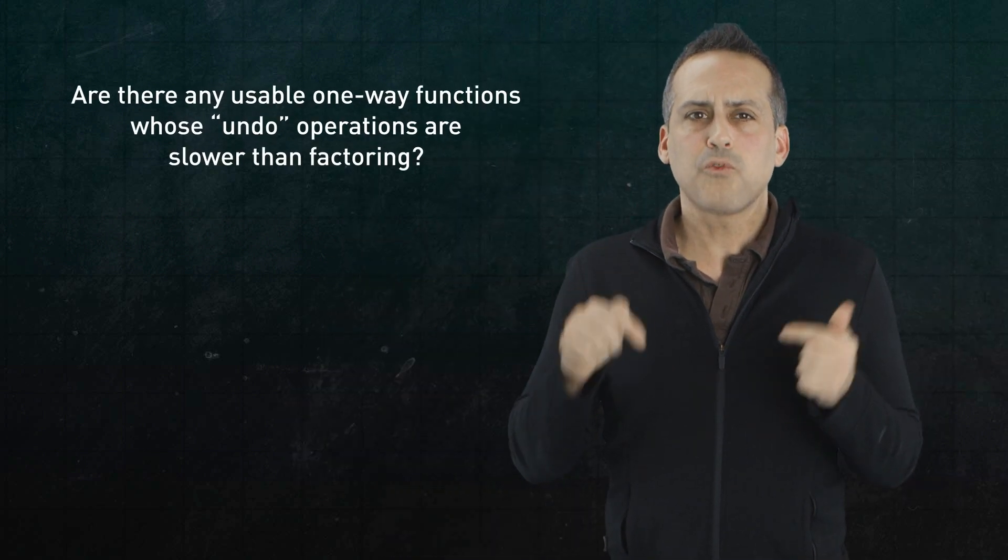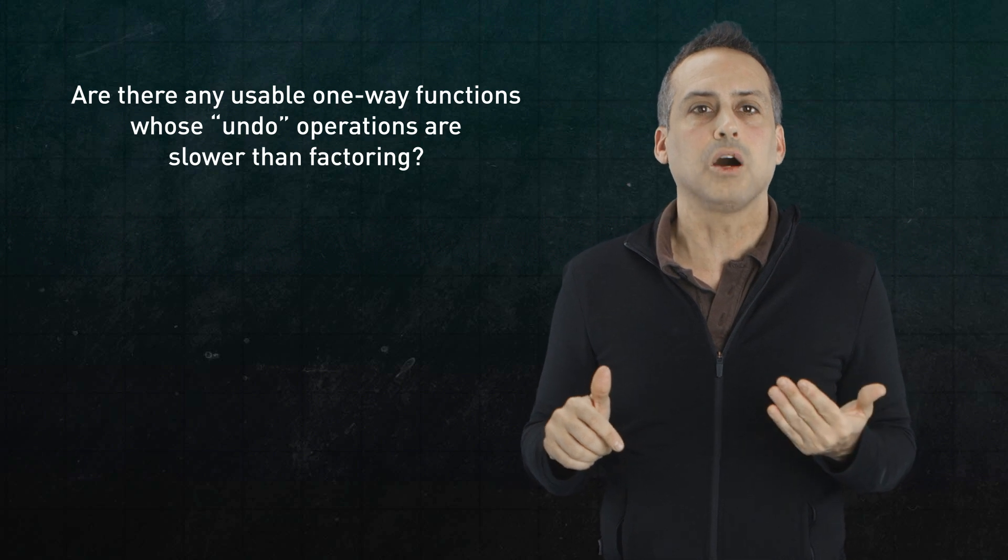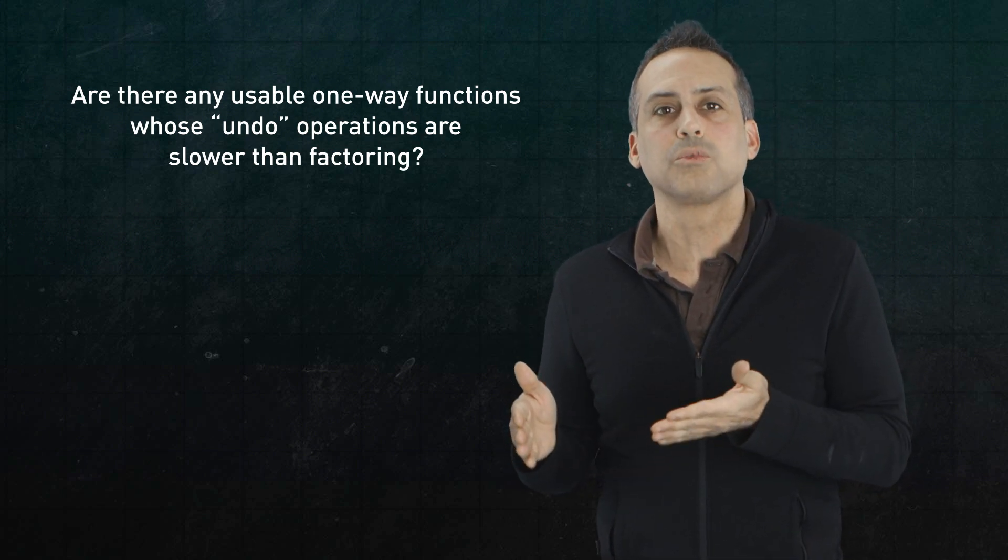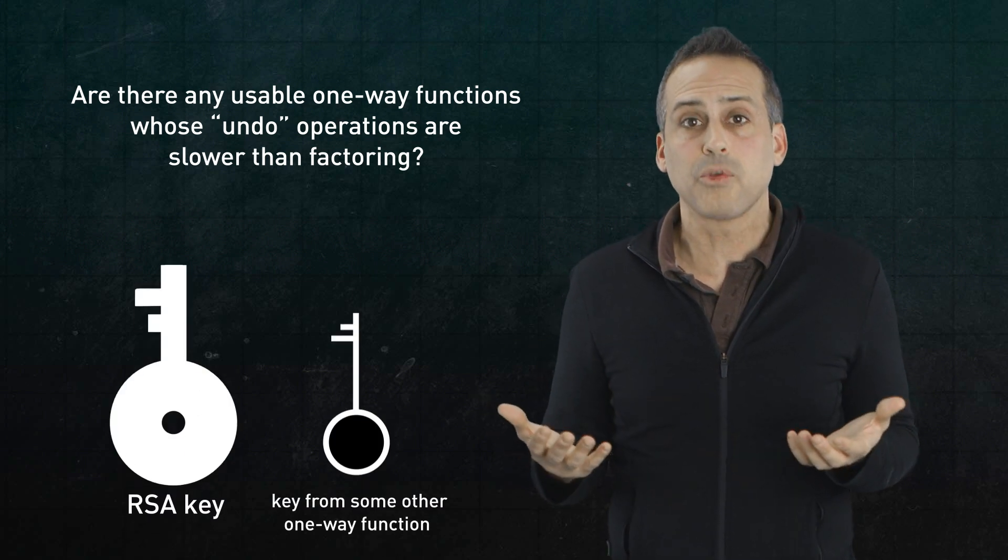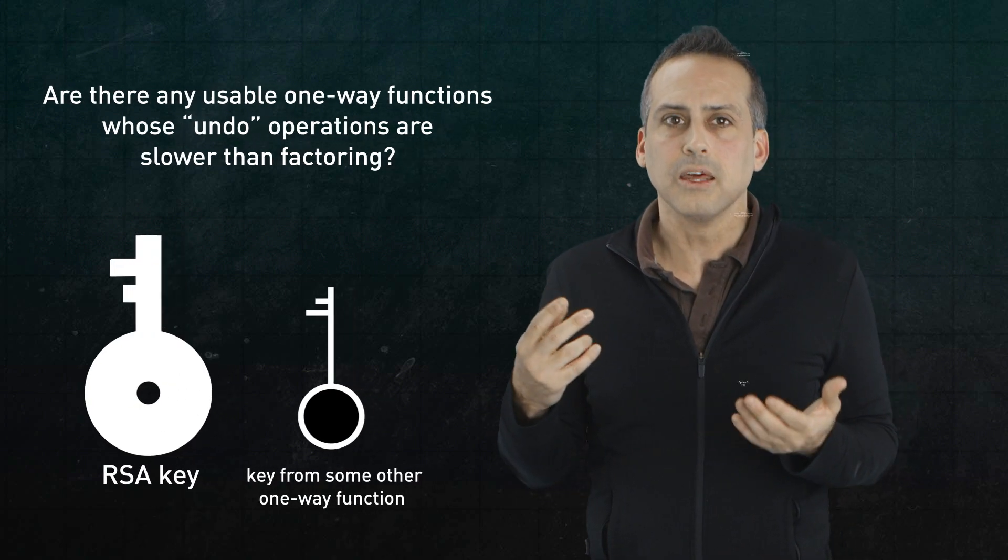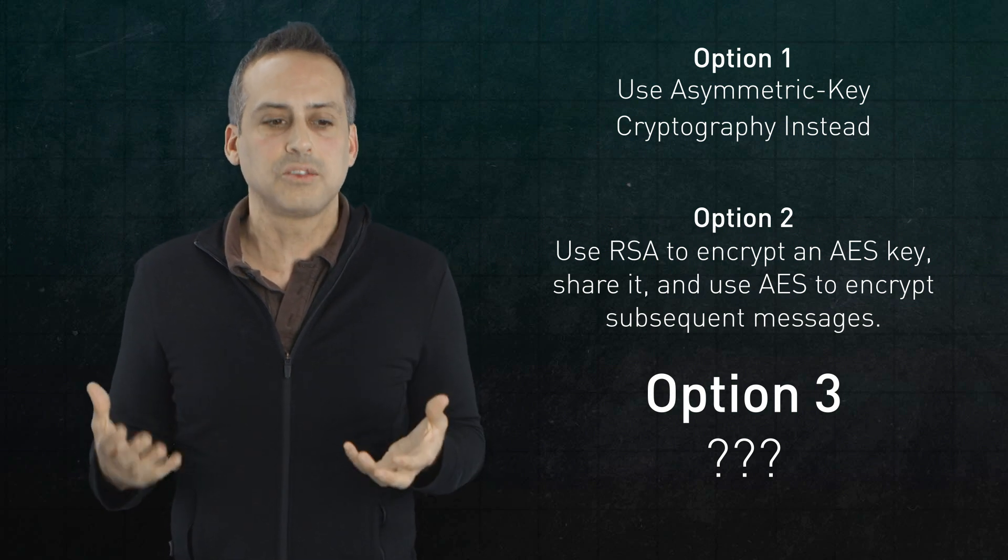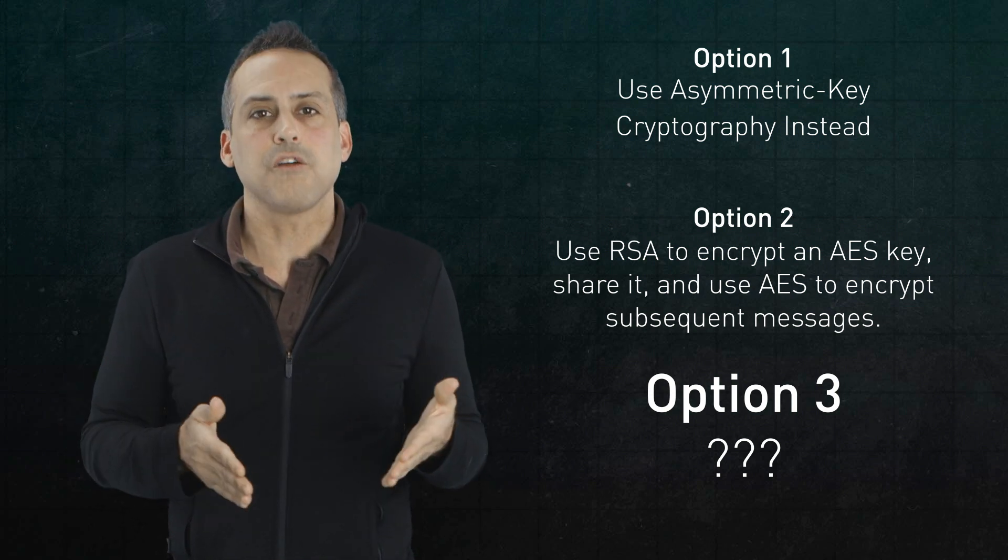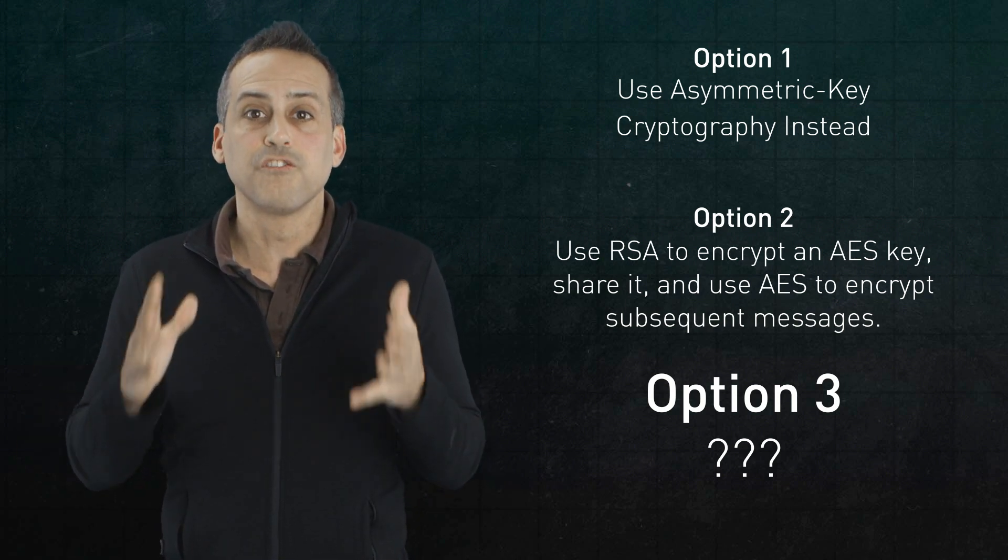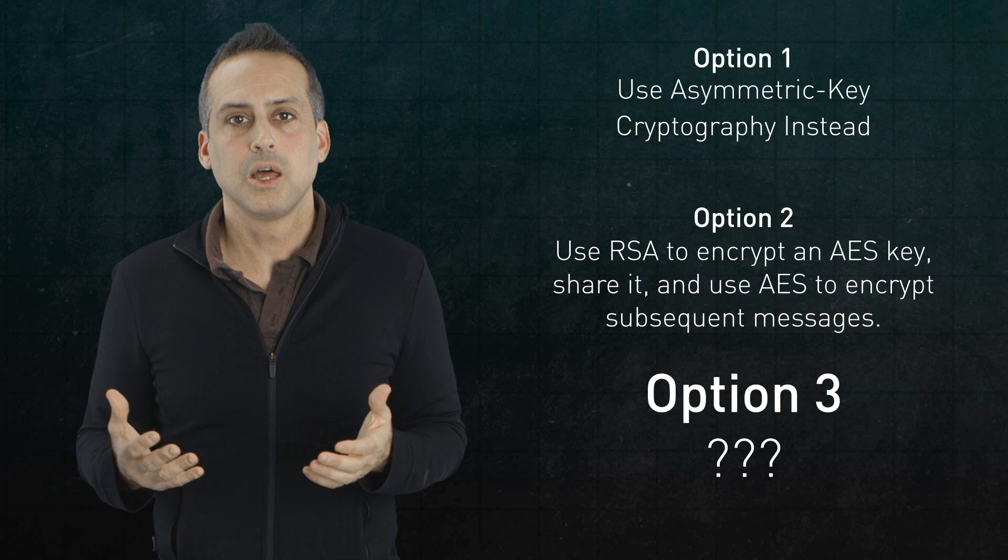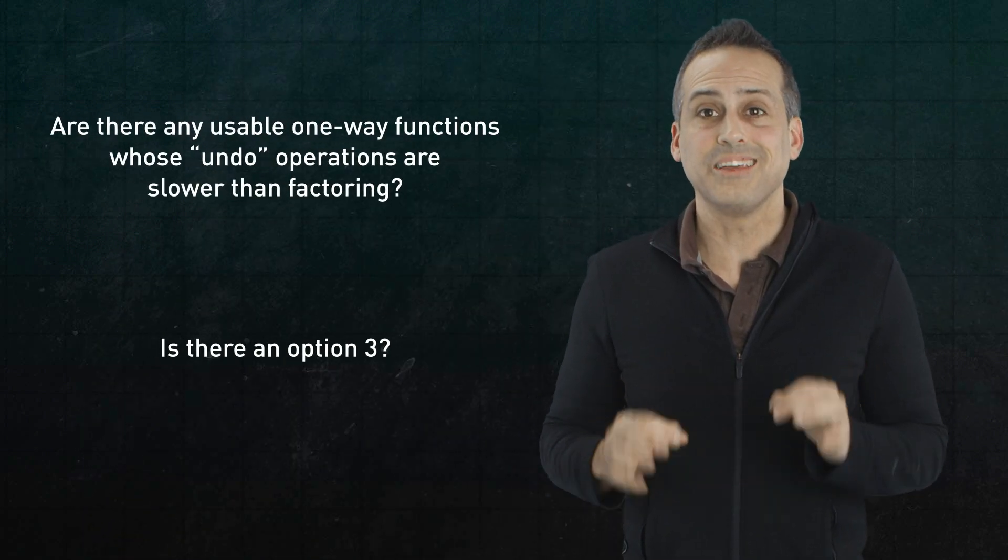One, if we are going to use asymmetric encryption, are there any other one-way functions we could base it on for which the undo algorithms are slower than the ones for factoring? Because if there were, we could get away with smaller keys. And second, does the option three that I referenced at the top of the episode actually exist? In other words, is there some other way for Alice and Bob to share a symmetric key besides full-blown asymmetric encryption? Now, as it turns out, these questions are related. And the answer to both of them is yes.